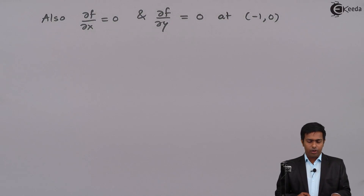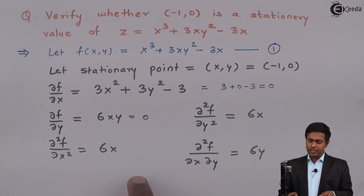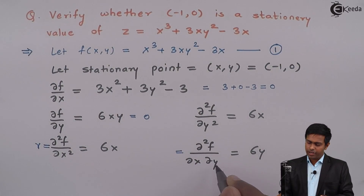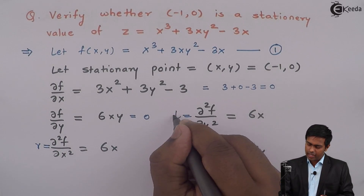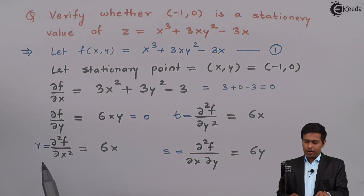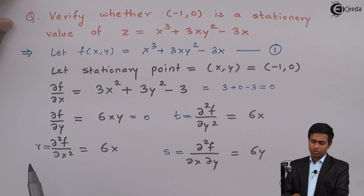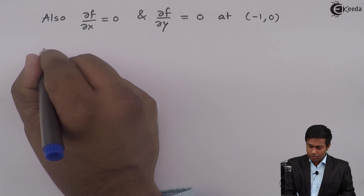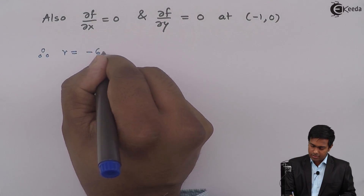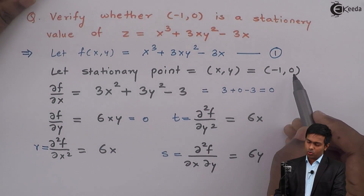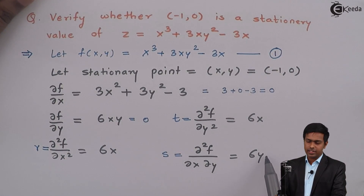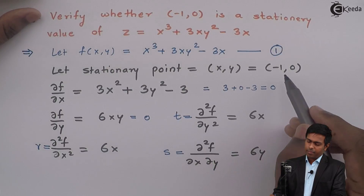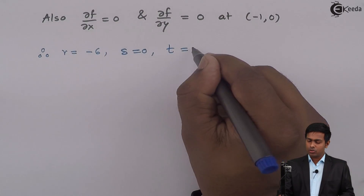Now let us check for minima or maxima. We denote ∂²f/∂x² as r, ∂²f/∂x∂y as s, and ∂²f/∂y² as t. Substituting minus 1 comma 0: r equals 6 times minus 1, which is minus 6. s equals 6 times 0, which is 0. t equals 6 times minus 1, which is minus 6.